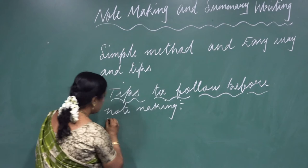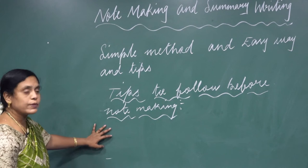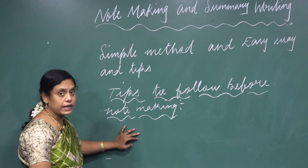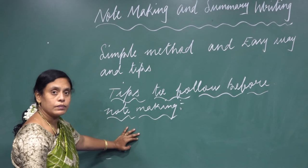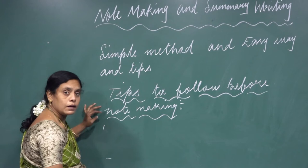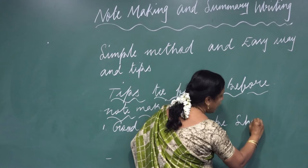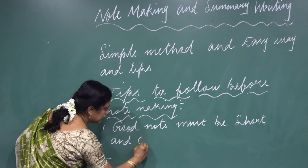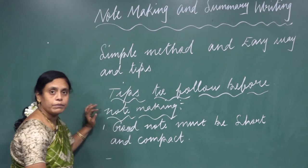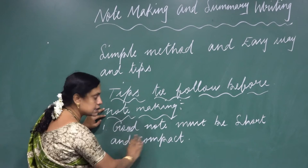So as we already know, for grades 9 through 12, how to write note making — the first point is that your good note must be short and compact. That is the first rule you must follow while writing note making. You should not write an elaborate one.